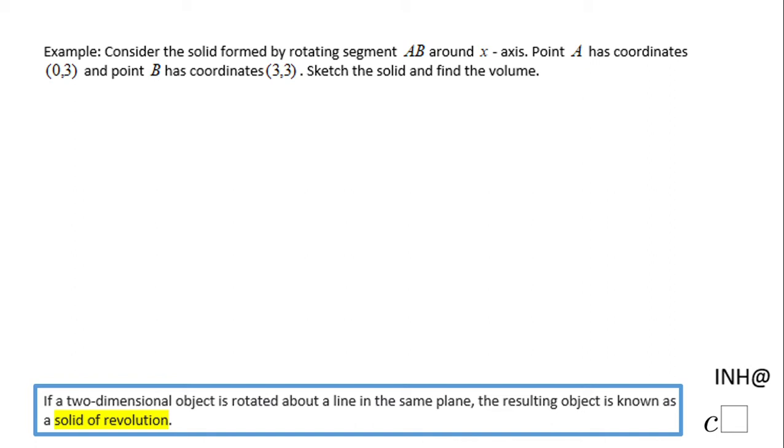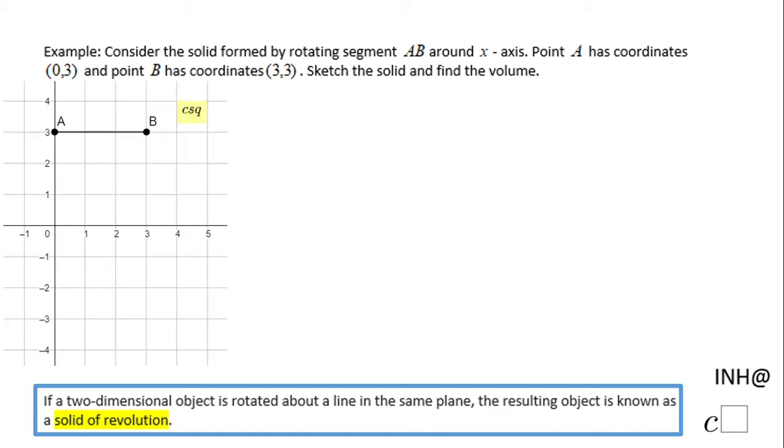(3,3). So in fact, let's see that segment. It's right here. Notice A is at (0,3), B is at (3,3), and we need to sketch the solid and find the volume. So let me show you how you can do this.